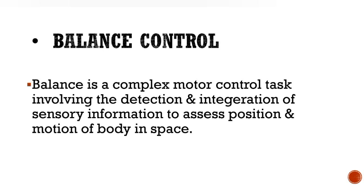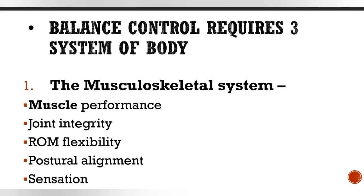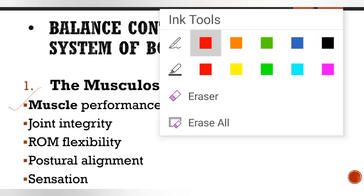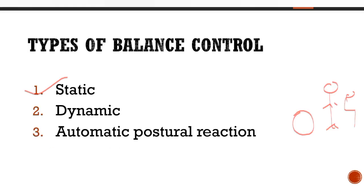Balance control is a complex motor control task which involves detection and integration of sensory information. That sensory information is detected, integrated, and used to translate the body's position in space. Three body systems are required to control balance. The first is the musculoskeletal system, which requires adequate muscle performance. If the muscles are weak, how does the body control balance?